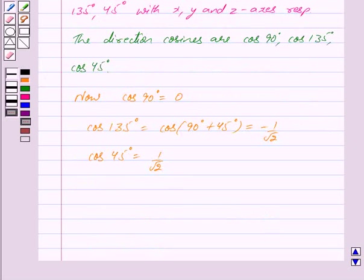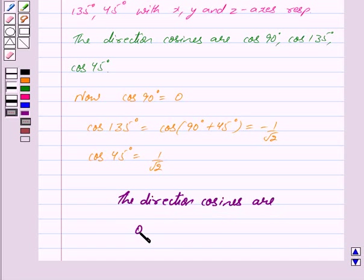So we have got the direction cosines as 0, minus 1 upon root 2, and 1 upon root 2. This is our answer. Hope you have understood the solution. Bye and take care.